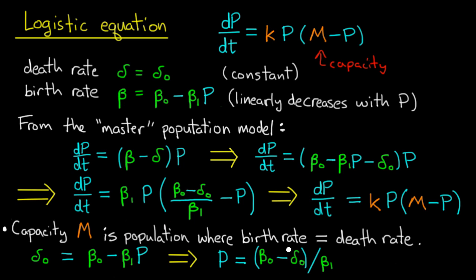So this value of P is the value which makes the death rate equal to the birth rate. And as you can see this is the same as M which is the maximum population capacity for our model.